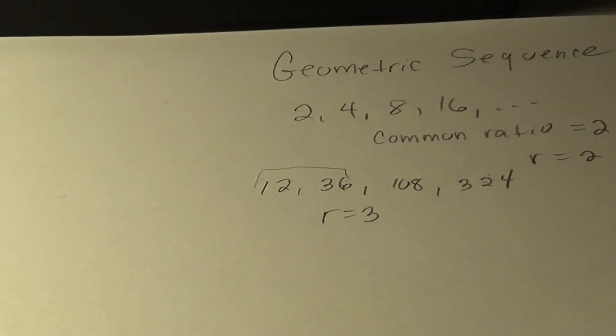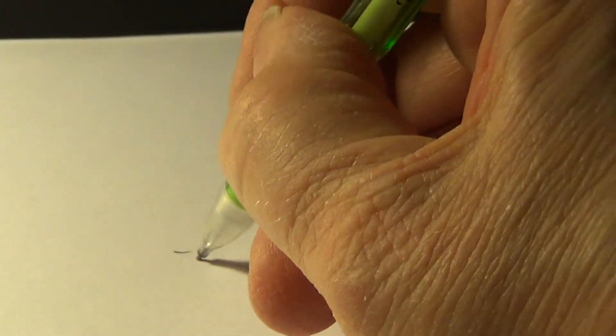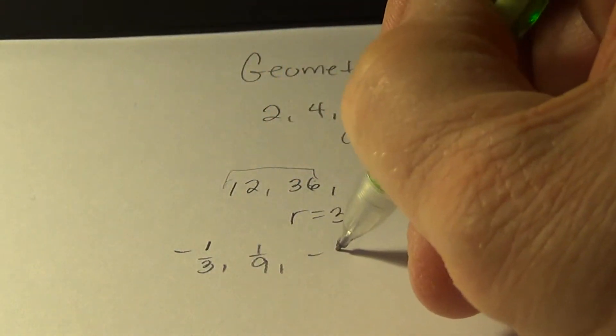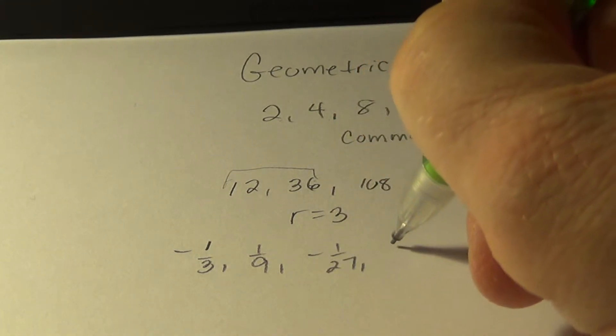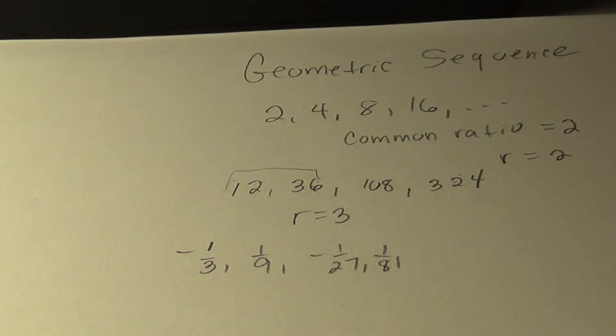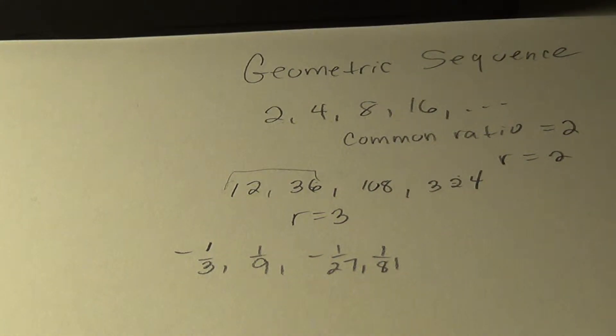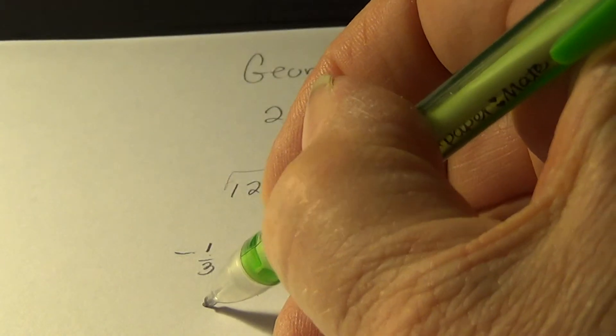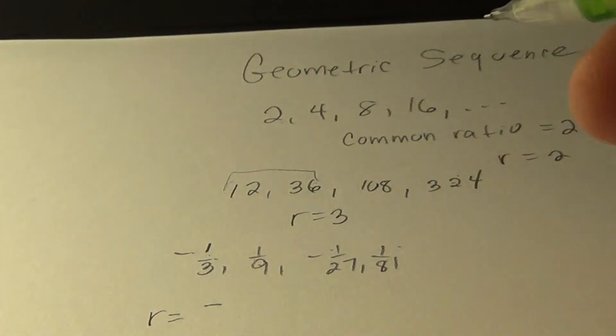How about this one? 1, negative 1 third, positive 1 ninth, negative 1 27th, and positive 1 81st. When I look at that sequence, what do I multiply each by to get the next? You'll see alternating signs, so therefore it must be a negative R in order to get that to happen.